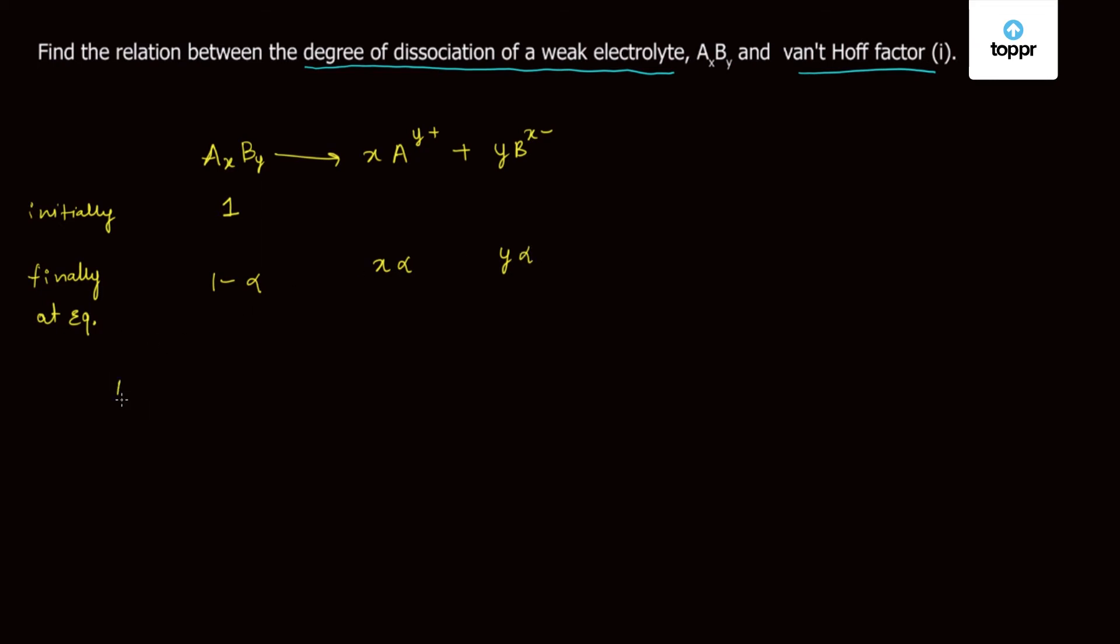Therefore, total number of moles at equilibrium is 1 minus alpha plus x alpha plus y alpha.